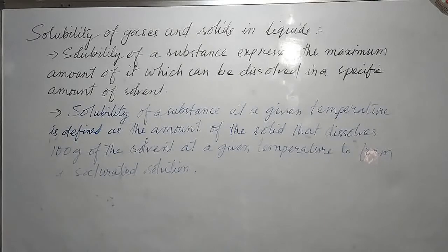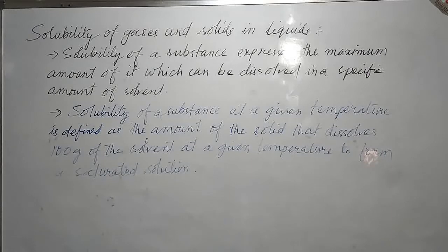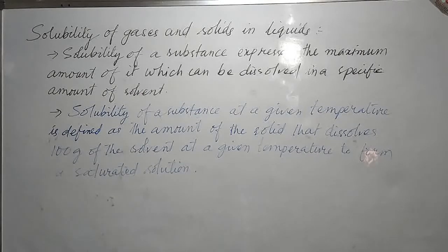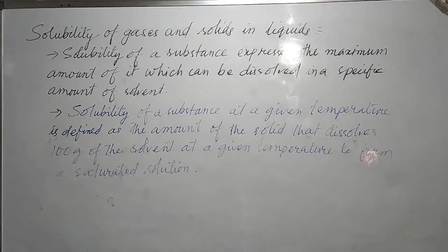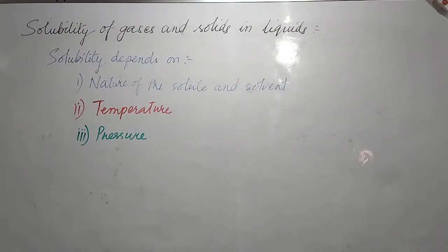The second definition: solubility of a substance at a given temperature is defined as the amount of solid that dissolves in 100 grams of the solvent at a given temperature to form a saturated solution. So the amount of solid that will dissolve in 100 grams of the solvent at a particular temperature to form a saturated solution is called solubility.